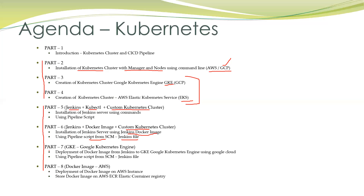Then we will move to part seven, where we will use the Google Kubernetes Engine GKE created in part three. We will deploy a Docker image from Jenkins to GKE using Google Cloud, and we will again use a Jenkinsfile for creating the CI/CD pipeline. This part seven demo is totally on GKE and Google Cloud. The Jenkins server will be created in Google Cloud, and we will use the GKE cluster from part three. So part seven combines and builds upon part three, and is entirely based on Google Cloud.